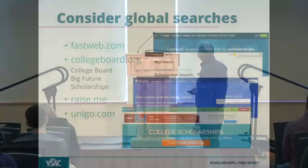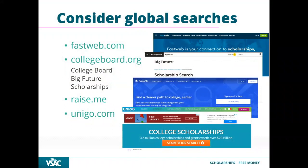For broader searches, sites like FastWeb let you create an account, enter details like your location, family background, and interests, and generate a list of potentially eligible scholarships. The results can seem mismatched, but they narrow things down. Broader scholarships have more competition, though local ones sometimes appear too. Every few years someone applies for fifty scholarships, gets only a few, but that covers their school costs — it's worth putting in the time.